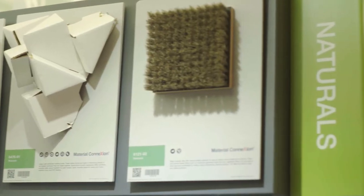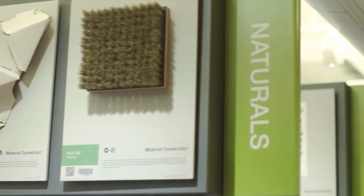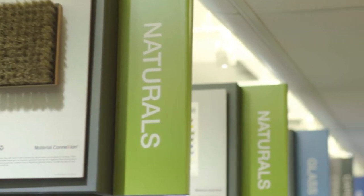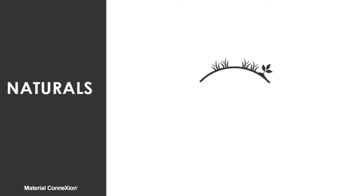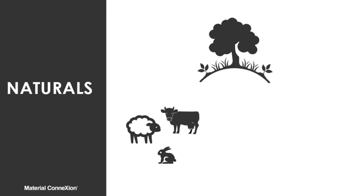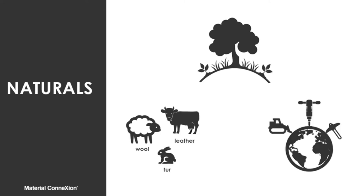I'm going to walk you through which of our materials are defined as naturals. For the sake of categorization and our diverse clientele, we simplified the definition of a natural to be a material that has been mined or grown from the earth, such as leather, wood, and natural fibers such as cotton and flax. We've created a separate category for metals due to their distinct properties.